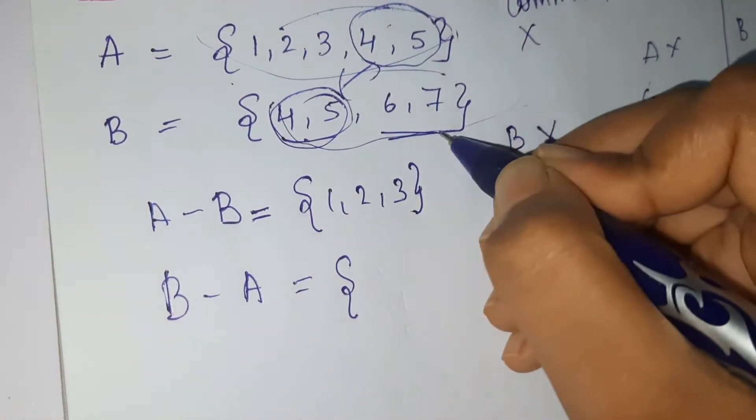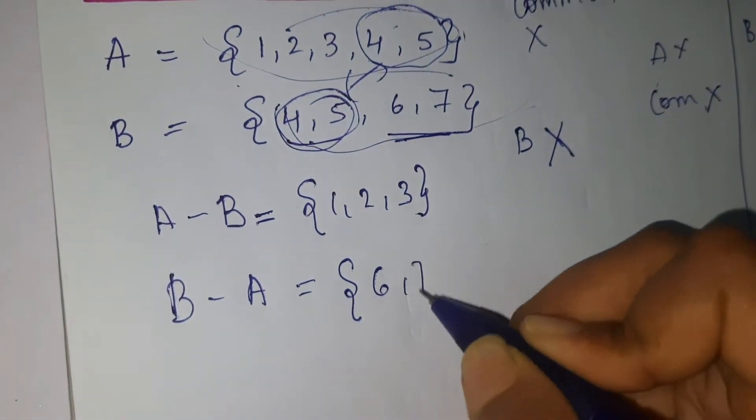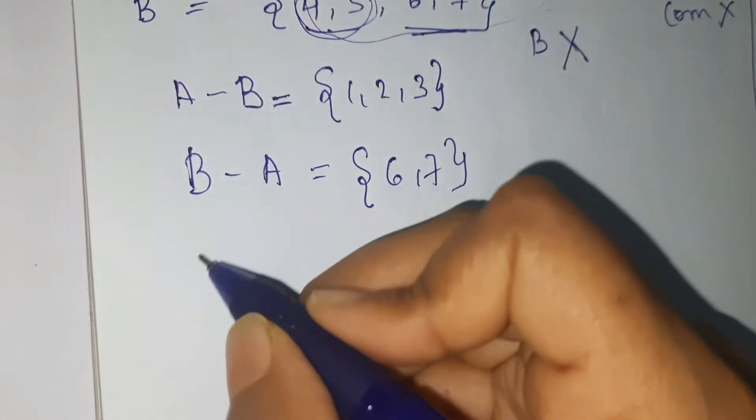Six and seven. I'll explain it with the Venn diagram. Okay, A minus B Venn diagram, let's do it.